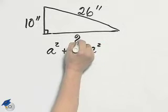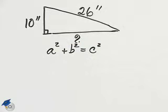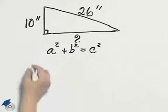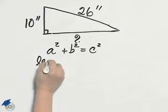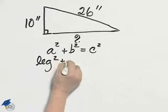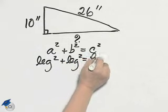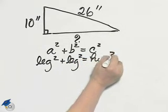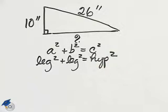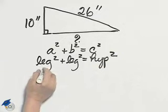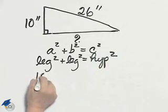but I imagine you notice that there are no a, b, and c on this triangle. So instead, let's use leg squared plus leg squared equals hypotenuse squared. And the 10 is a leg, so leg squared would be 100.